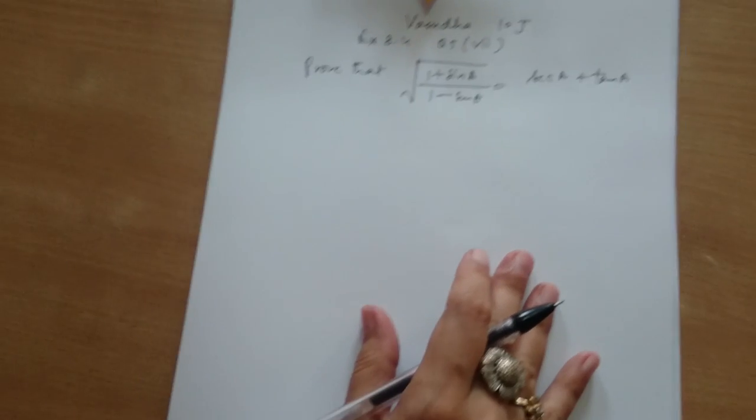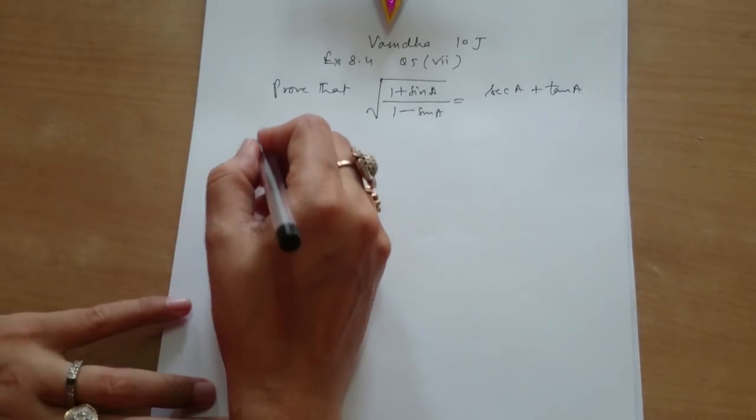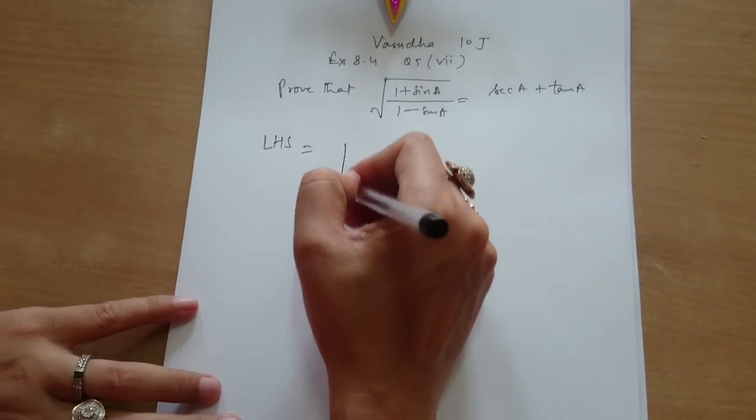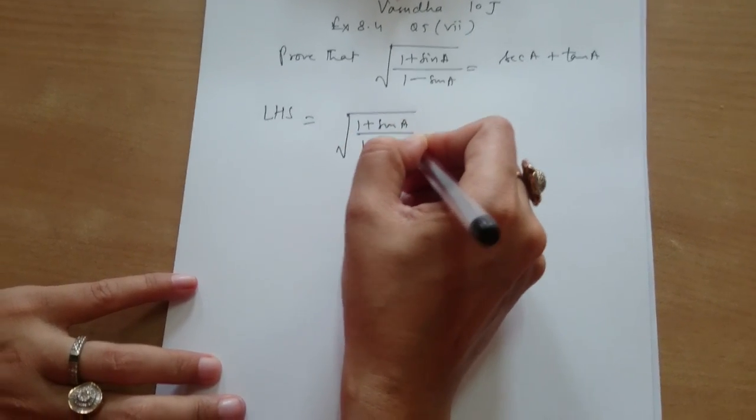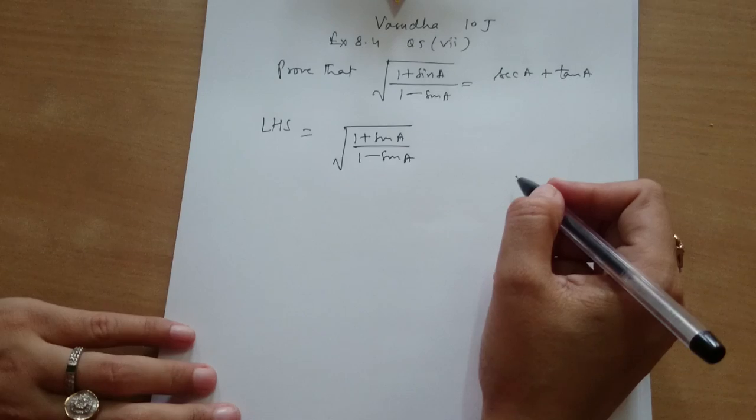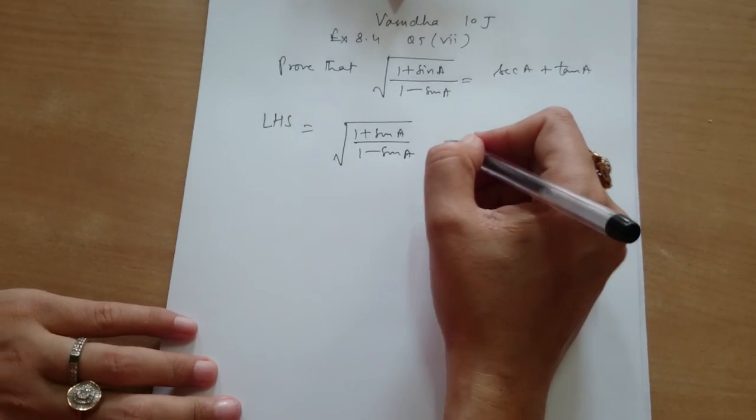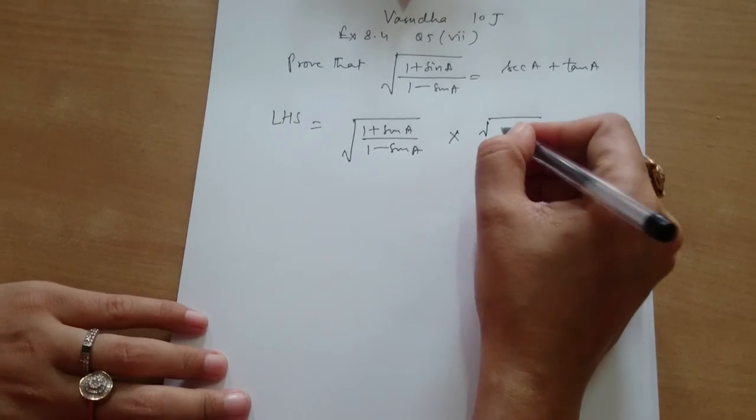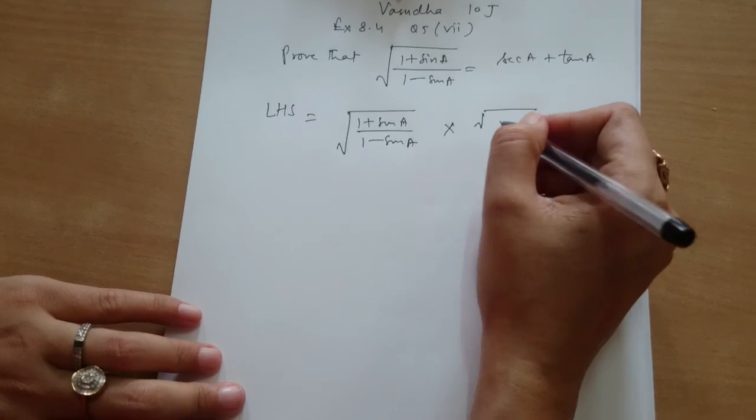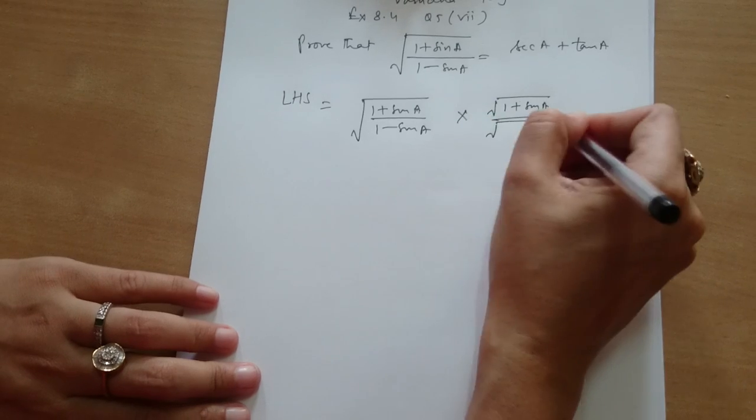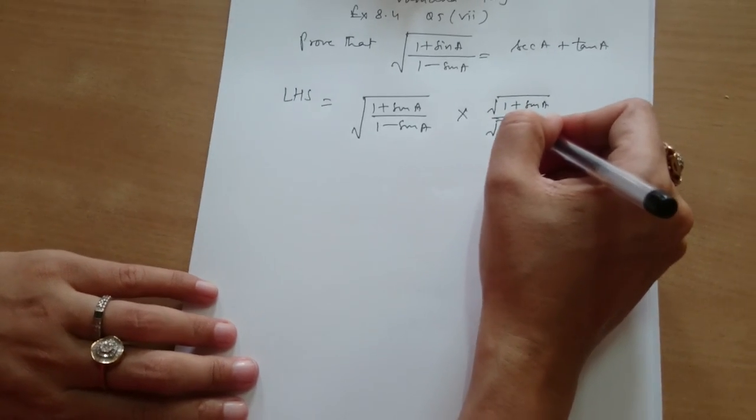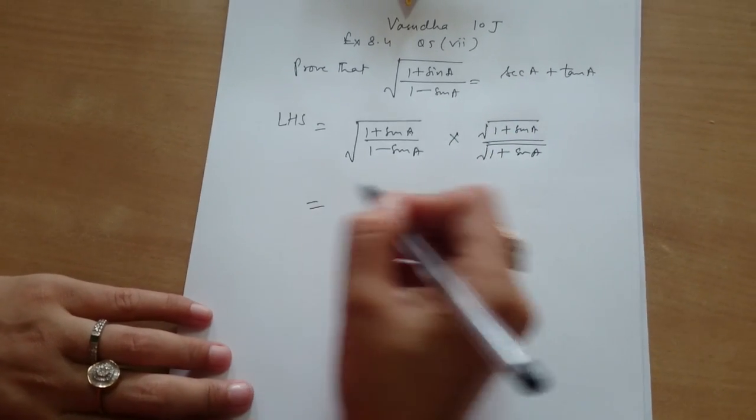Tell me how you will do this. First of all we will rationalize left hand side. Okay, left hand side is under root of 1 plus sin A upon 1 minus sin A. For rationalizing what should I do? Multiply numerator and denominator by 1 plus sin A, which gives under root of 1 plus sin A upon 1 plus sin A, which is equal to.